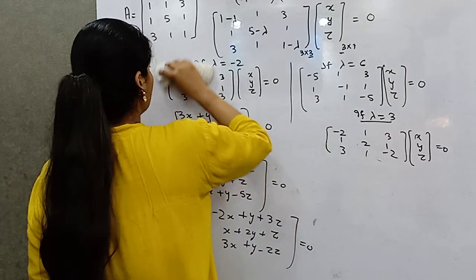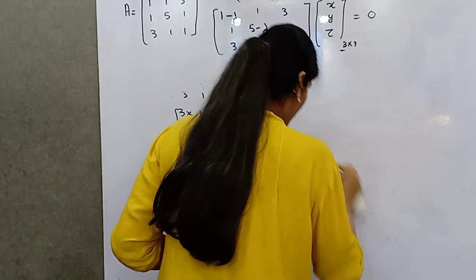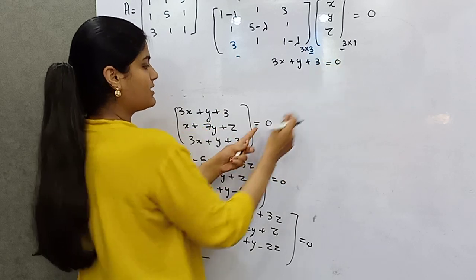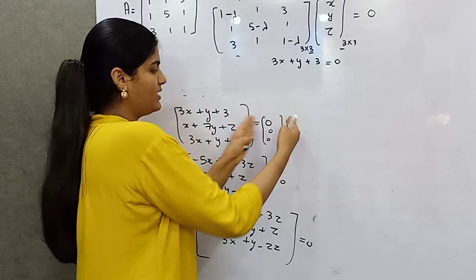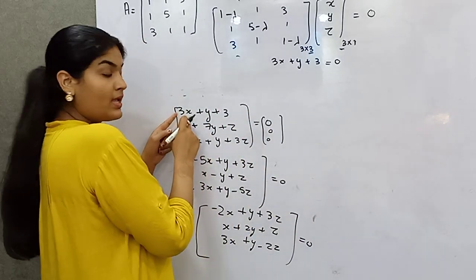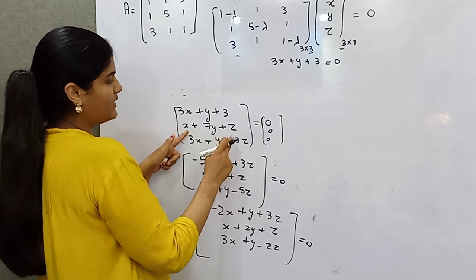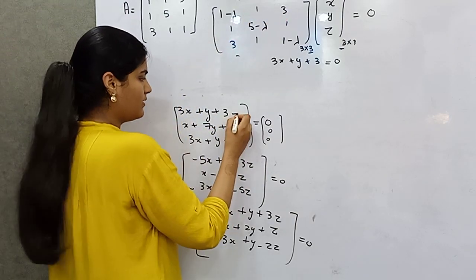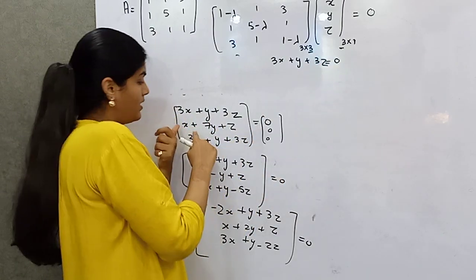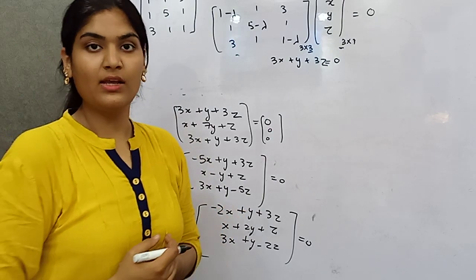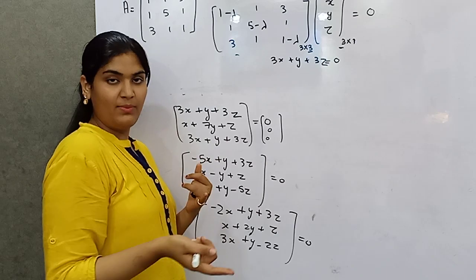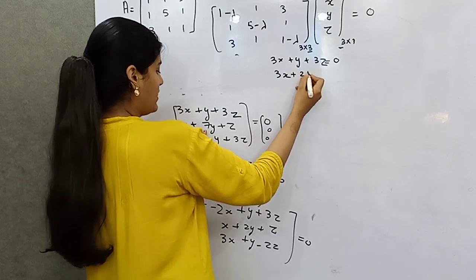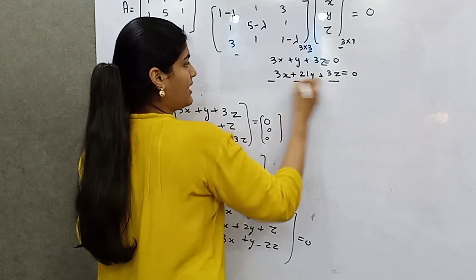Now let's solve the first system for lambda = -2. We have 3x + y + 3z = 0 and x + 7y + z = 0. Using the elimination method — multiply the second equation by 3 to get 3x + 21y + 3z = 0 — and subtract. This gives minus 20y = 0, so y = 0.